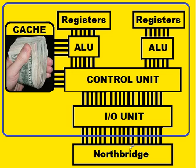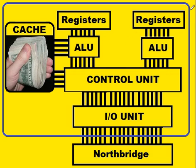Between the I.O. unit and the north bridge is the front side bus, which is literally an external bus — external to the CPU unit, that is.